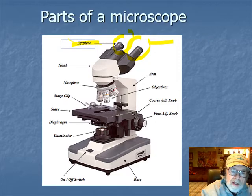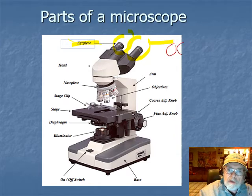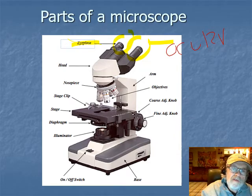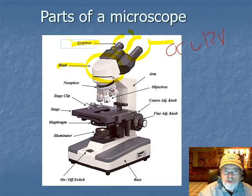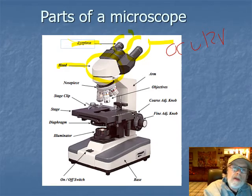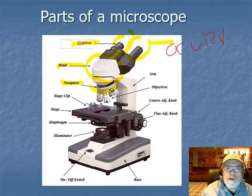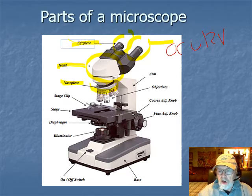Once we go down from the eyepiece, I get to what's called the head - this area right here. Below that is the nosepiece. The nosepiece revolves around and has lenses on it.